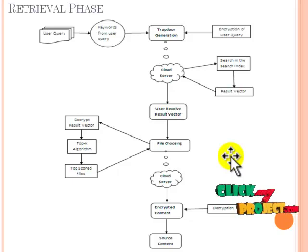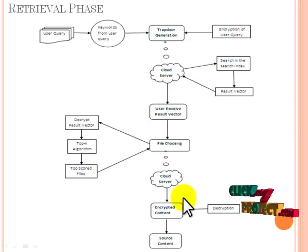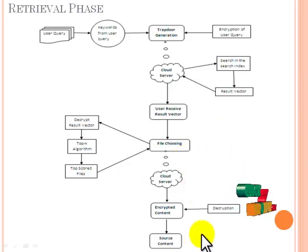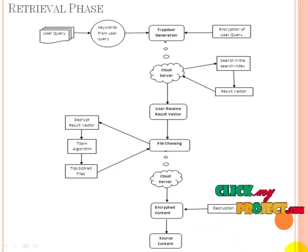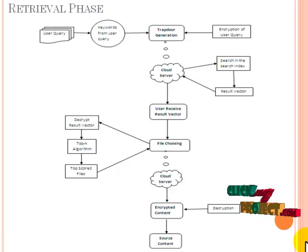The second phase is the retrieval phase, which consists of the processes of the data user. The data user generates a query containing a set of keywords to retrieve a file. The user query is encrypted with the user keys, and the encrypted query is known as a trapdoor.